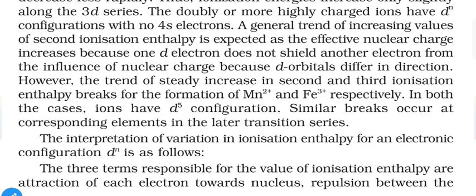However, the trend of steady increase in second and third ionization enthalpies breaks at the formation of Mn²⁺ and Fe³⁺ respectively. In both cases the ions have a d⁵ electronic configuration. Similar breaks occur at the corresponding elements in later transition series. In short, if you have a comparatively stable electronic configuration, you need to put more energy to make it unstable.